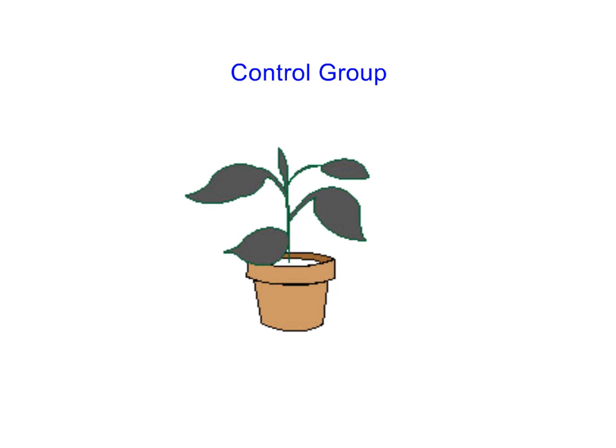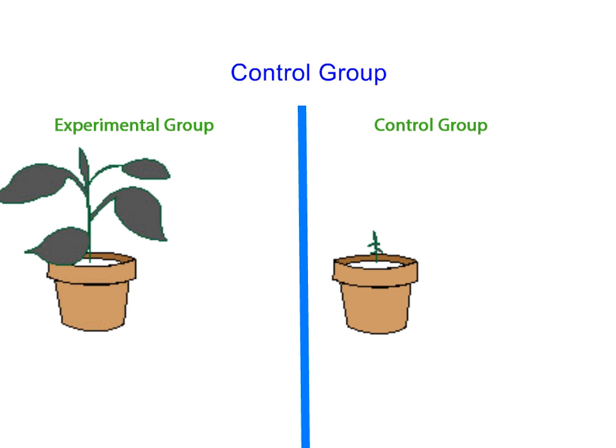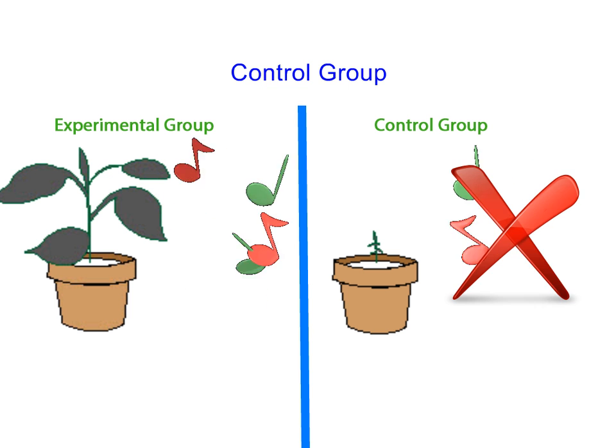Now let's identify what a control group refers to. In the case of our plant experiment, the control group is a group of plants with the same controlled variables, but these plants receive no music at all. Why would we do that? Well, we really want to make sure that it is the music that is affecting plant growth. So if we see differences between the control group and the experimental group, then we can say the change is accounted for by the music.